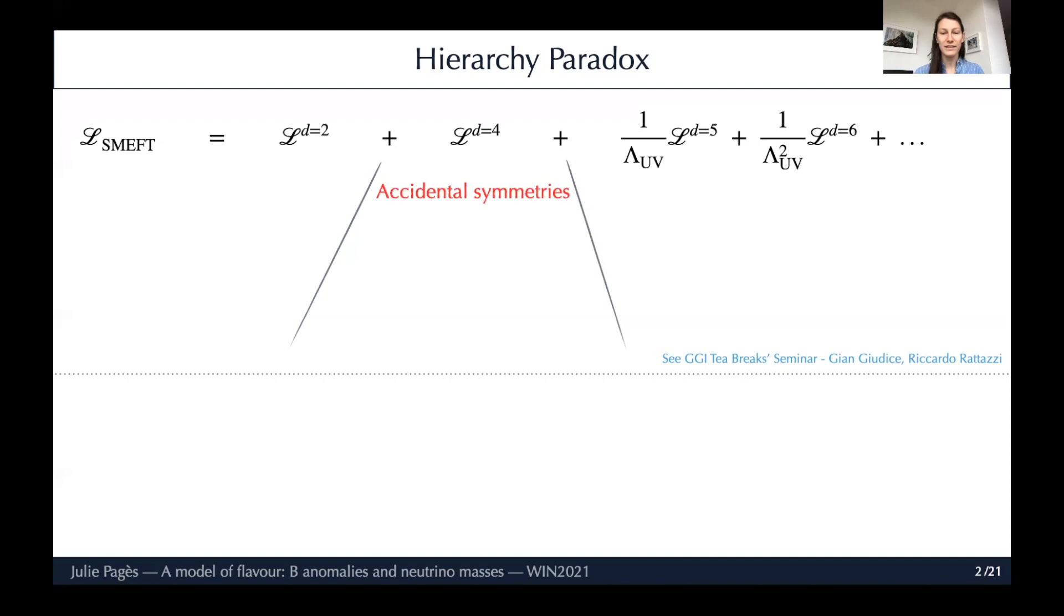In the renormalizable part of the Lagrangian, we have accidental symmetries. I find that the idea of accidental symmetries is best described by the Rattazzi's cow. A cow in itself is highly non-symmetric - it has a tail, a head, and if you move around you don't see the same thing. But if the cow is really far away from you, you only can distinguish a sphere. If you choose to describe it as a sphere, SO(3) becomes an accidental symmetry of your system. It's not a fundamental symmetry but a consequence of the approximation.